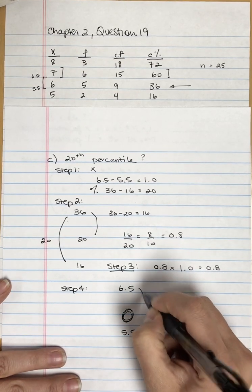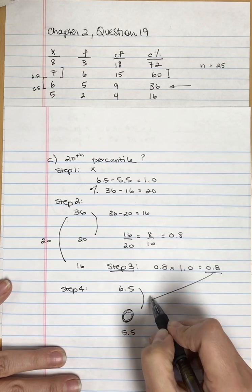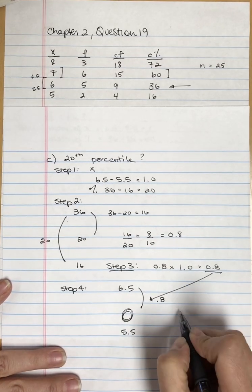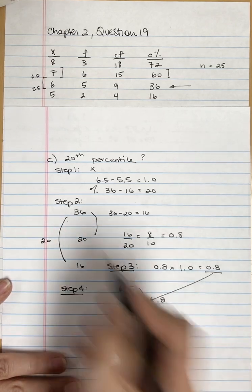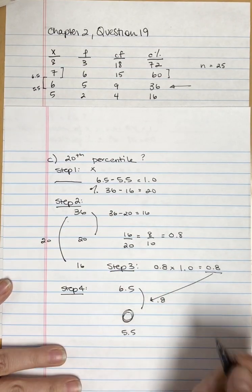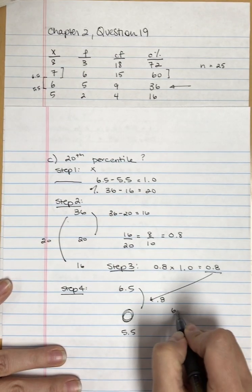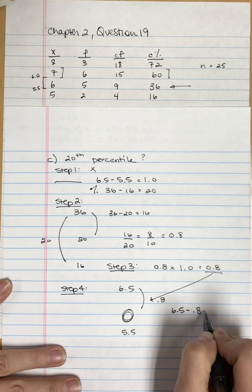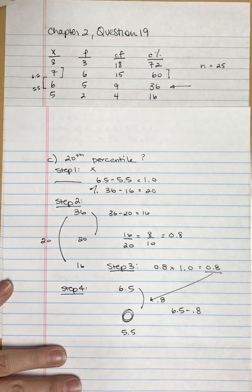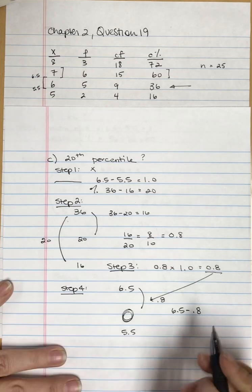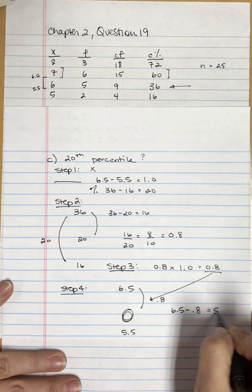We know we have to go down 0.8 units. So the answer is 6.5 minus 0.8, which is 5.7.